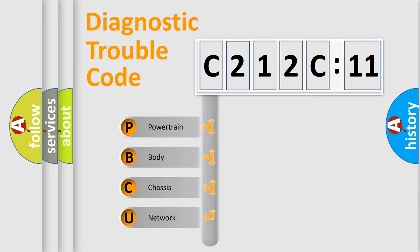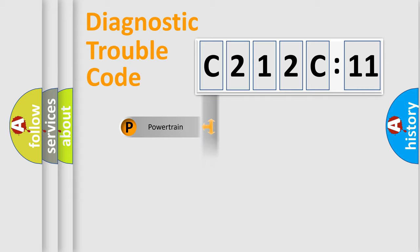If the second character is expressed as zero, it is a standardized error. In the case of numbers 1, 2, 3, it is a more prestigious expression of the car-specific error.